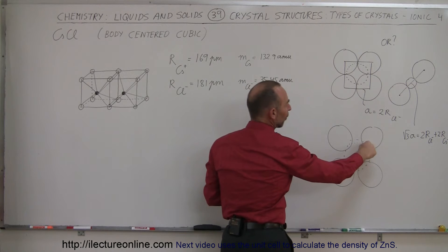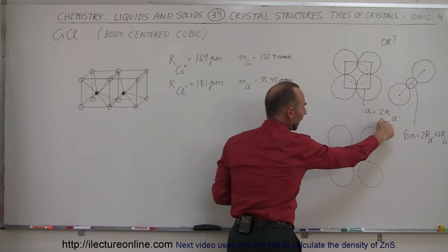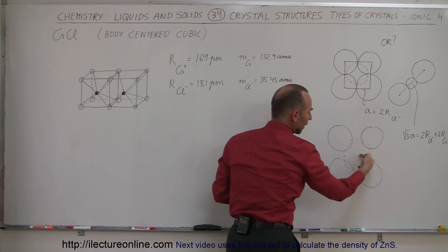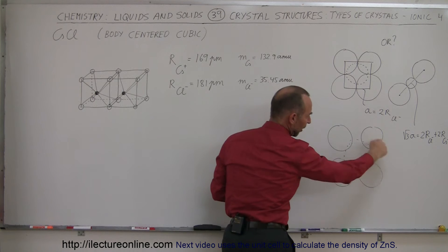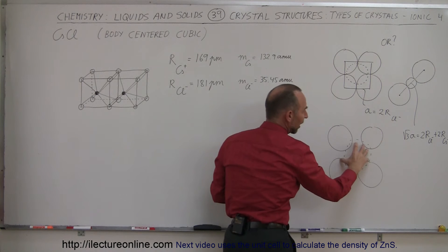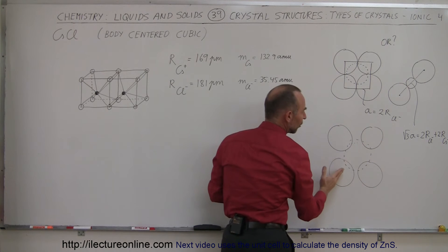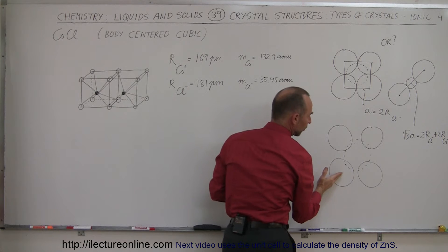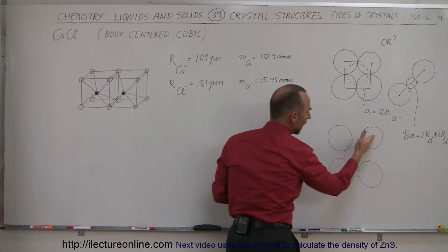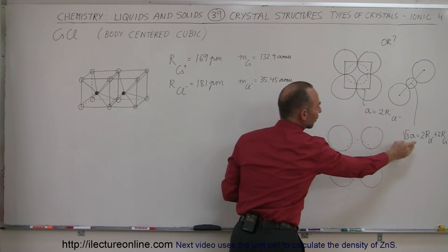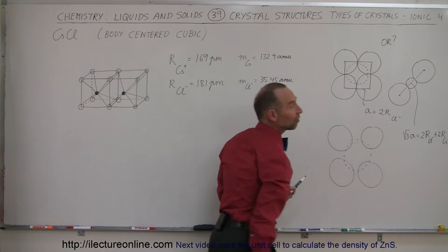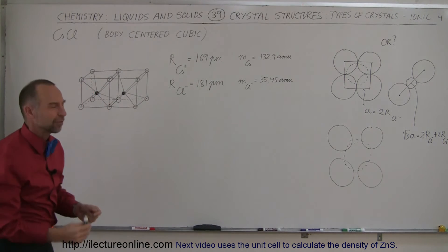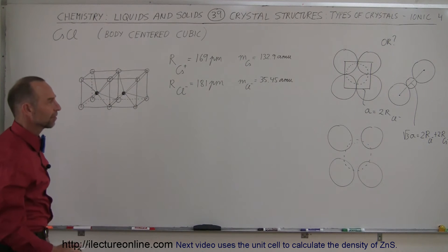Since the ions at the front corner and back corner will be touching the central ion, the best way to find the dimension is to go from the front corner to the back top corner diagonally across and use this particular formula. It makes sense when you think about the relative sizes of those ions.